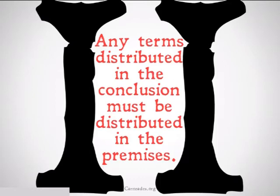We remember that the subject of the conclusion is going to be known as the minor term. If the minor term is distributed in the conclusion but not in the premises, it's going to be called illicit minor. And the predicate is known as the major term. If it's distributed in the conclusion but not the premises, it's going to be the fallacy of illicit major.